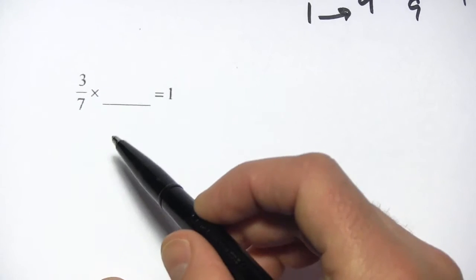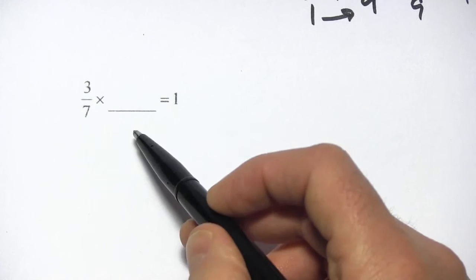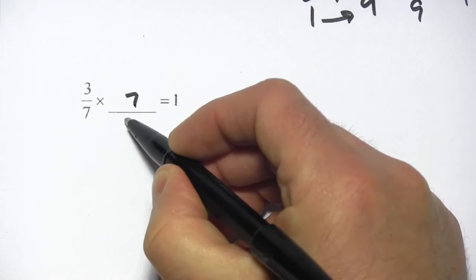So you might see a problem like this, where it says 3 sevenths times what equals 1. And all you need to know there is put in the reciprocal, so 7 thirds.